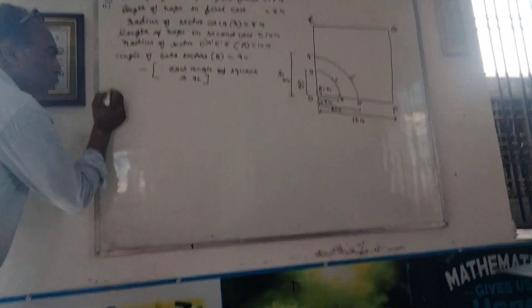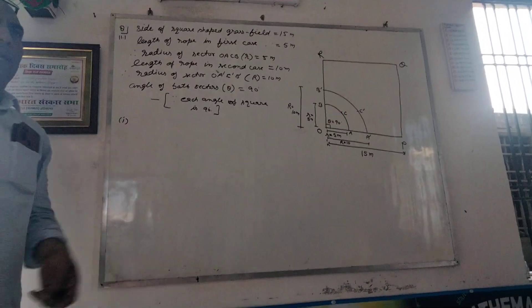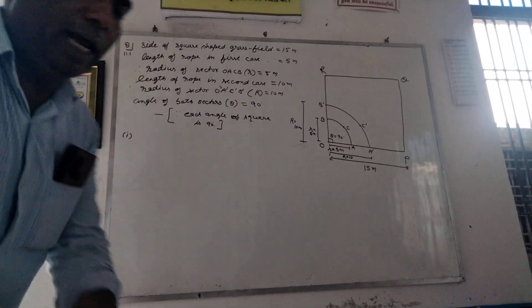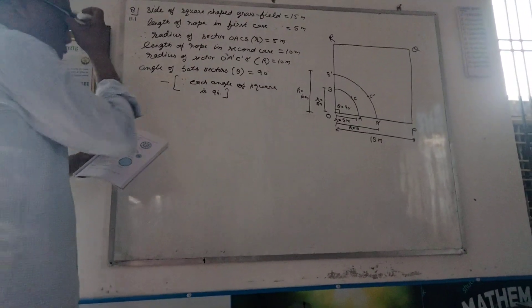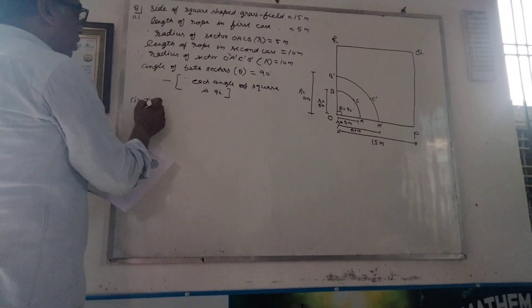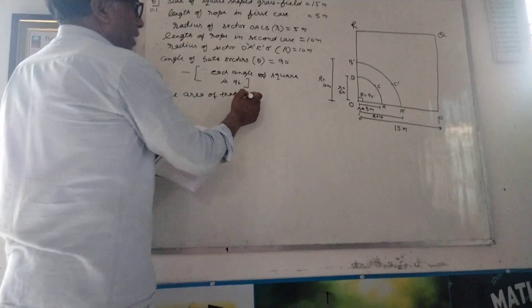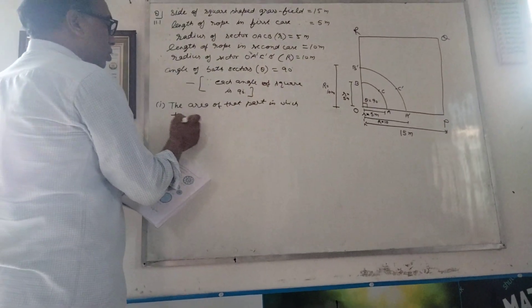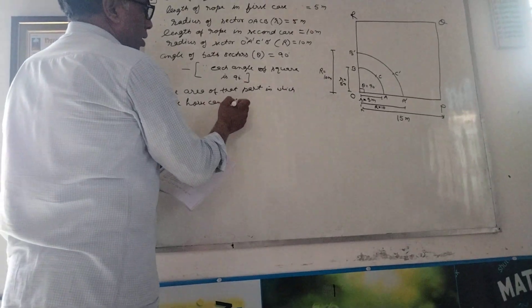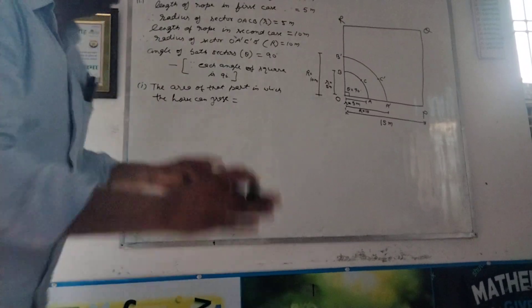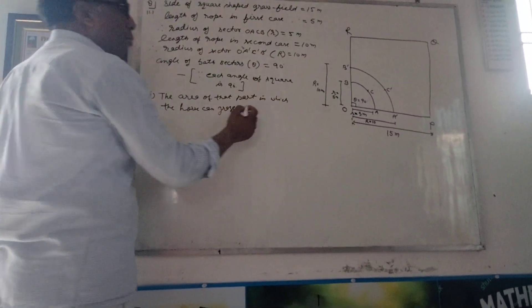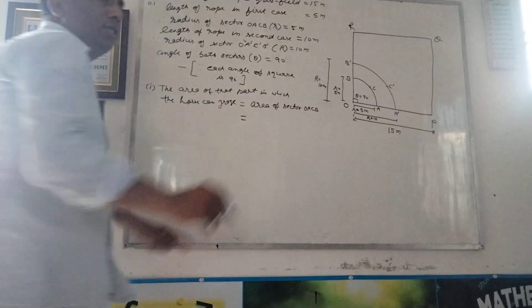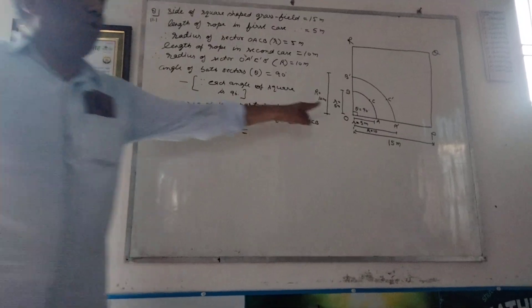Now the first case is our first case. What do you want to do in the first case? The area of the part in which the horse can graze. In the first case, this is our first case. What do you want to do in the first case? The area of the part. The area of the part is OAC. So it comes from OAC.